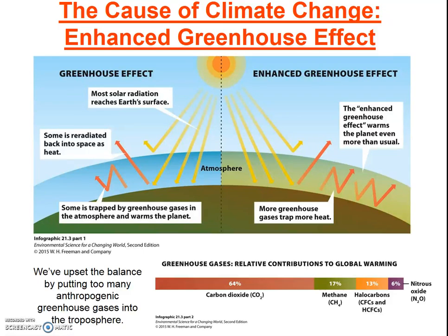Here's infographic 12.3 from your text, showing on the right-hand side the enhanced greenhouse effect. Humans have enhanced the natural greenhouse effect by putting extra carbon dioxide, extra methane, extra nitrous oxide, and extra halocarbons into the atmosphere. Much of this has been done by the burning of fossil fuels, though there are other sources of these gases as well.